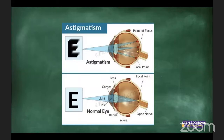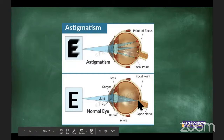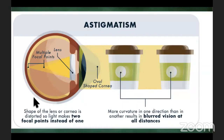Astigmatism is caused when the lens isn't smooth. They give you a lens that will focus the image on the retina properly. With astigmatism, things look blurry at all distances — regardless of whether it's near or far — because the image can't form properly. Blurry vision at all distances is a key symptom of astigmatism.